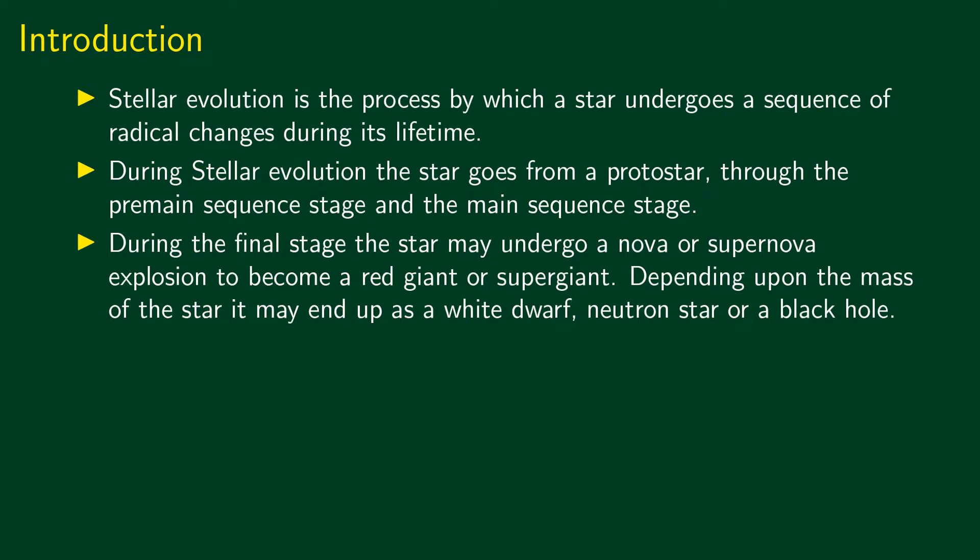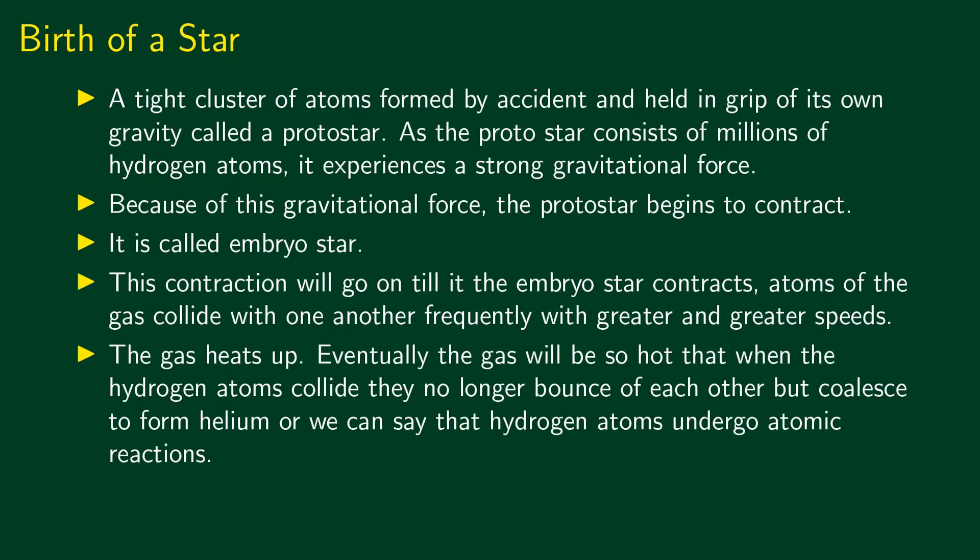So the main processes are: proto-star, pre-main sequence, main sequence, then a red giant or super giant, and finally a white dwarf, neutron star, or black hole. The birth of a star begins with gravitationally contracting gases.